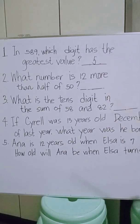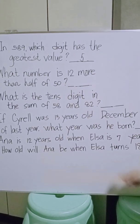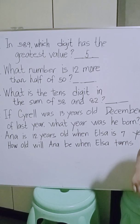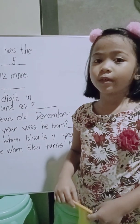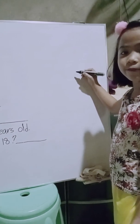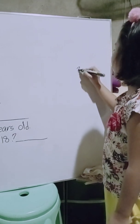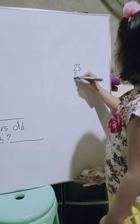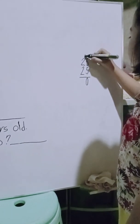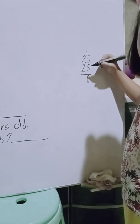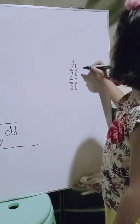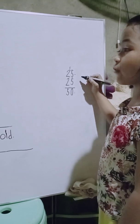What number is 12 more than half of 50? Half of 50 is 25. We have to make sure that half of 50 is really 25. We are going to add 25 plus 25. 5 plus 5 is 10, 2 plus 2 is 4, plus 1 is 5. So 50. 25 is really 1 half of 50.